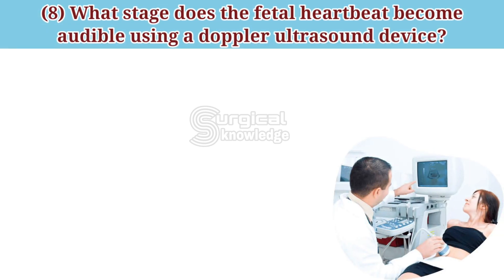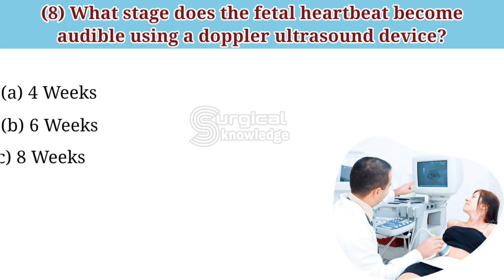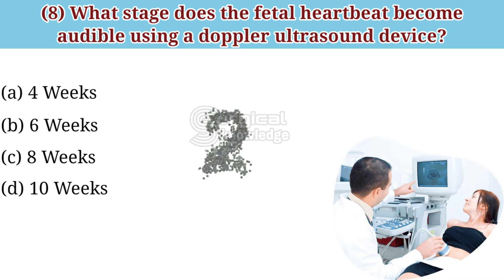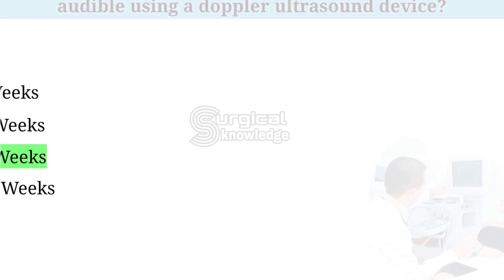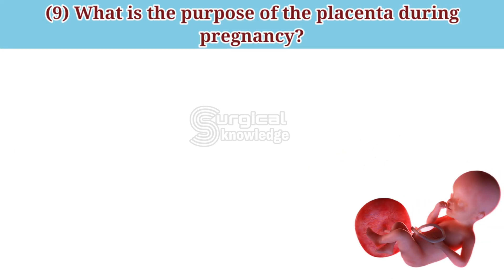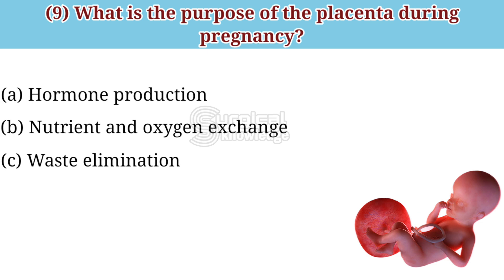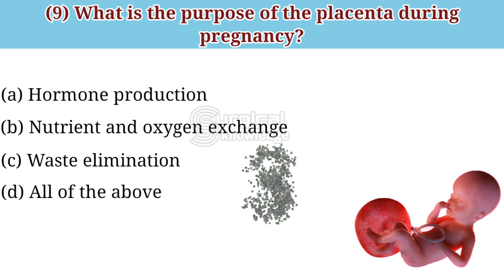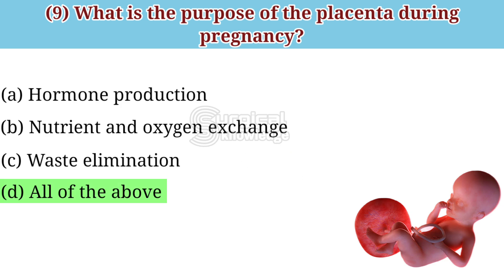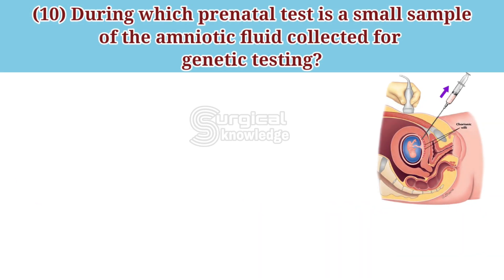At what stage does the fetal heartbeat become audible using a Doppler ultrasound device? Options: four weeks, six weeks, eight weeks, ten weeks. The correct answer is eight weeks. What is the purpose of the placenta during pregnancy? Options: hormone production, nutrient and oxygen exchange, waste elimination, all of the above. The correct answer is all of the above.